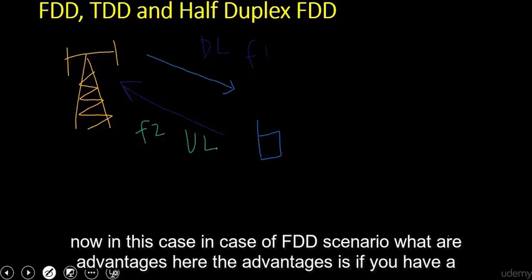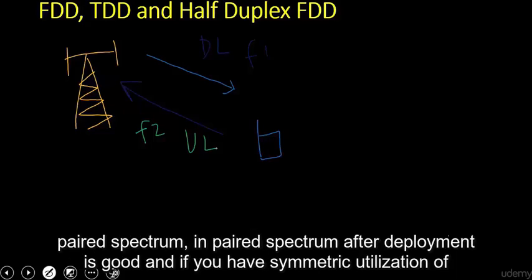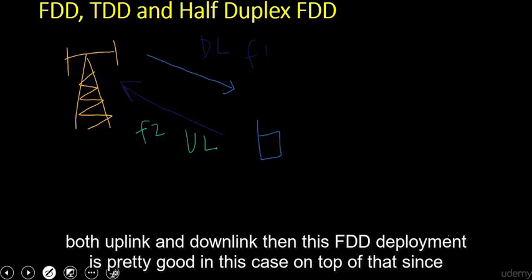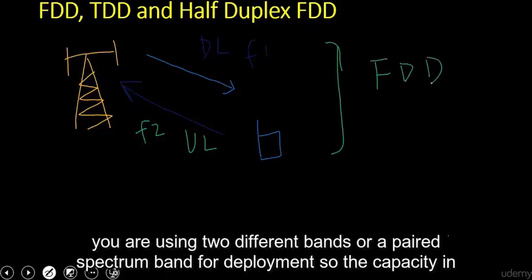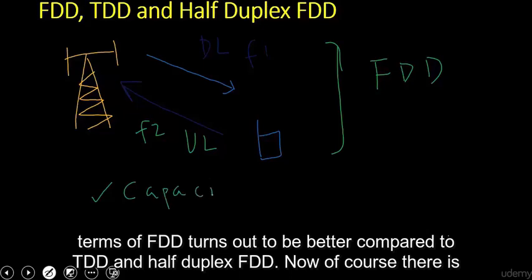In the FDD scenario, the advantages are: if you have a paired spectrum, FDD deployment is good. And if you have symmetric utilization of both uplink and downlink, then FDD deployment works well. Since you are using two different bands or a paired spectrum band, the capacity in terms of FDD turns out to be better compared to TDD and Half Duplex FDD.